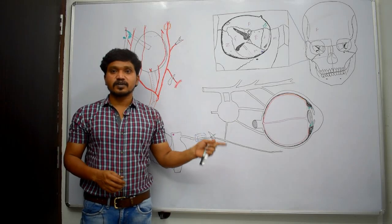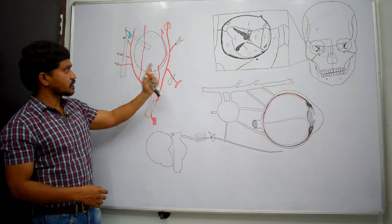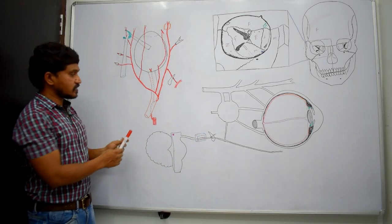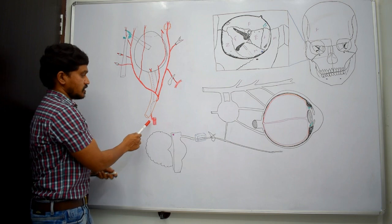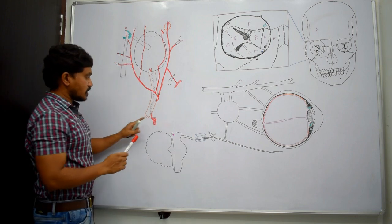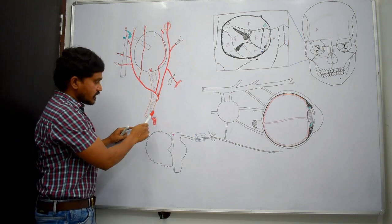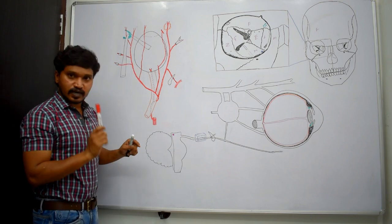In this session, we will discuss one more structure present in the orbit — the ophthalmic artery. This is the ophthalmic artery. It takes its origin from the internal carotid artery.